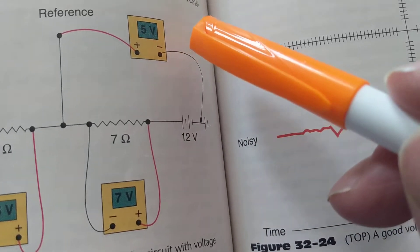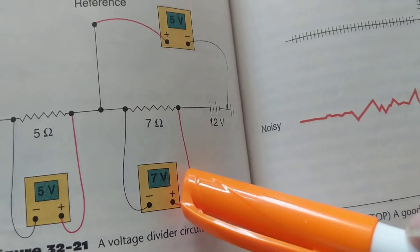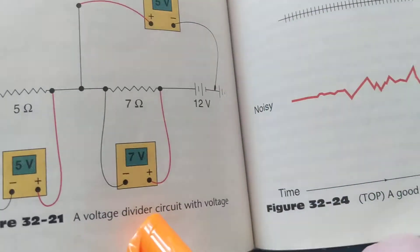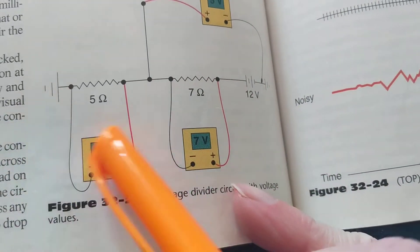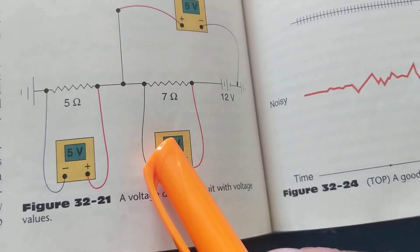Now we're going with reference to ground. So look how it changed. This one over here we said it's 5 volts. Great. This one over here, 7 volts. Great.